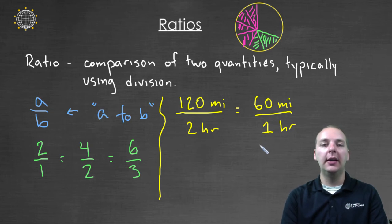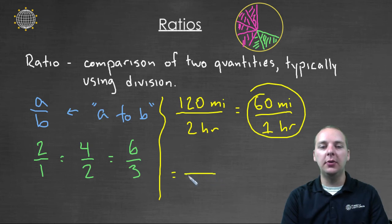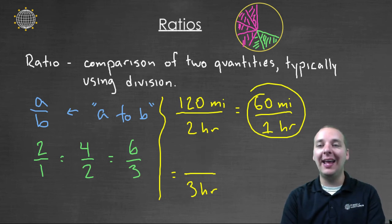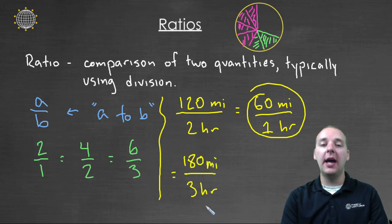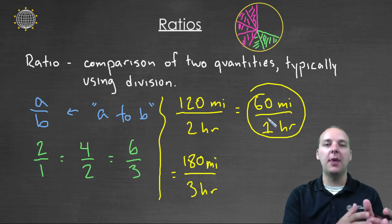And so using this ratio, you could determine how far we would go in any amount of hours. For example, let's say we wanted to determine the distance that we traveled in three hours. Well, an equivalent ratio to sixty over one, as a denominator of three, would be a hundred and eighty, a hundred and eighty miles in three hours, assuming that we've maintained the same ratio, the same speed of sixty miles per hour.